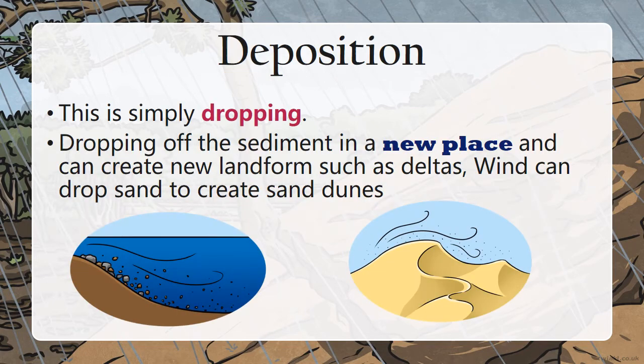Deposition. Some people said deposition. Well, this is simply dropping — the dropping of sediments in a new place — and can create new landforms such as deltas. The wind can drop sand to create sand dunes.